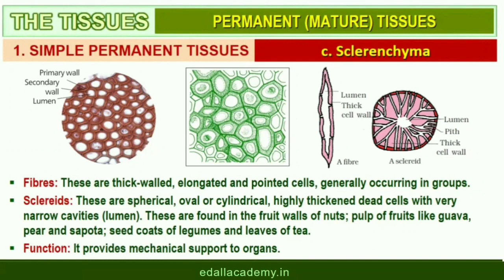The sclerids are spherical, oval, or cylindrical, highly thick and dead cells with very narrow cavities called lumen. These are commonly found in the fruit walls of nuts, pulp of fruits like guava, pear, and sapota, seed coats of legumes, and leaves of tea. Sclerenchyma provides mechanical support to organs.